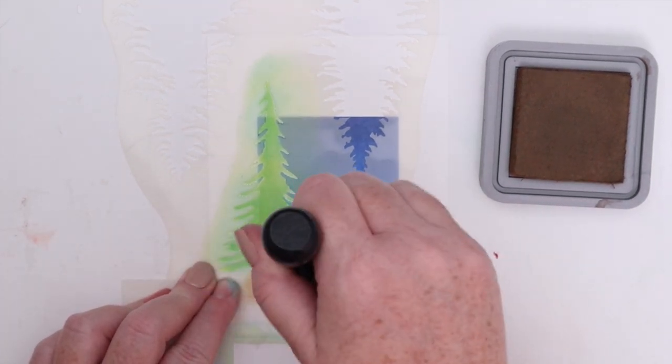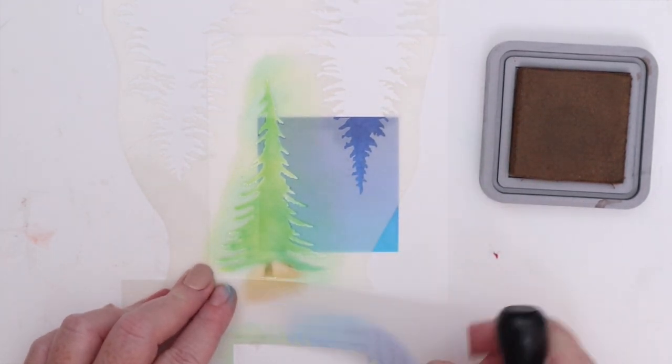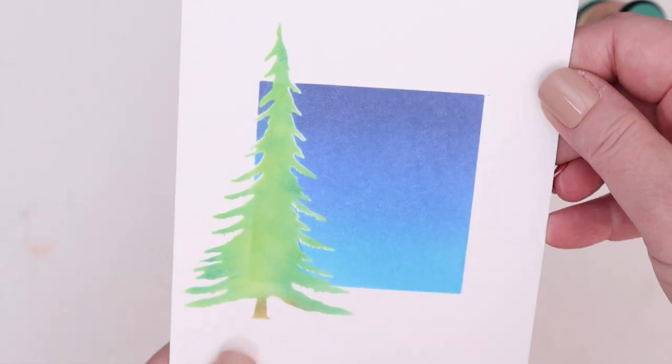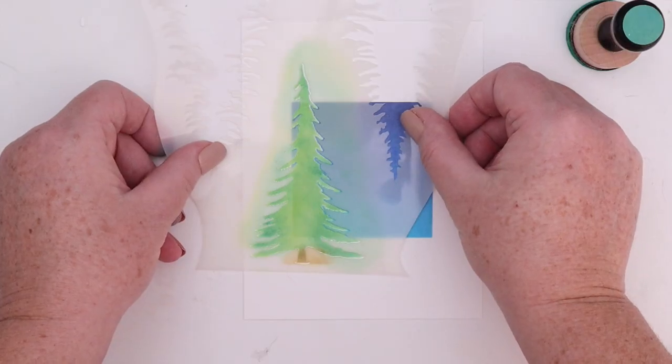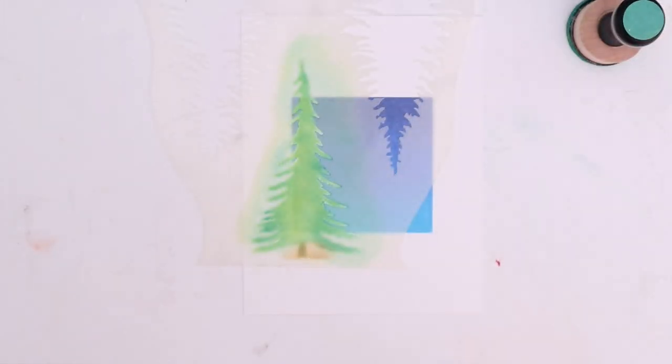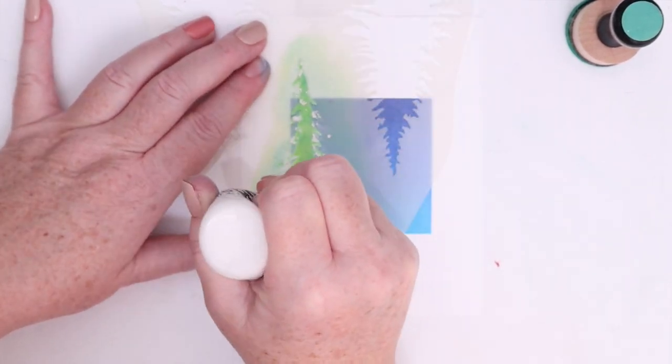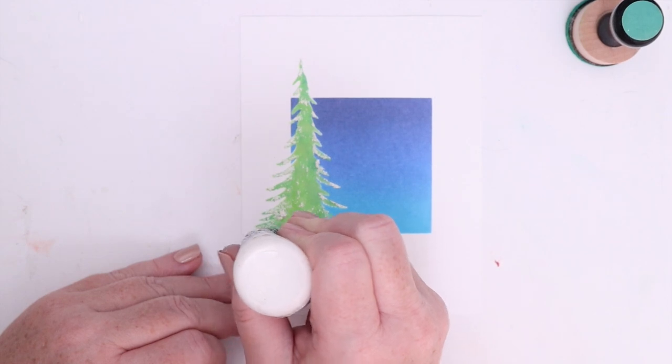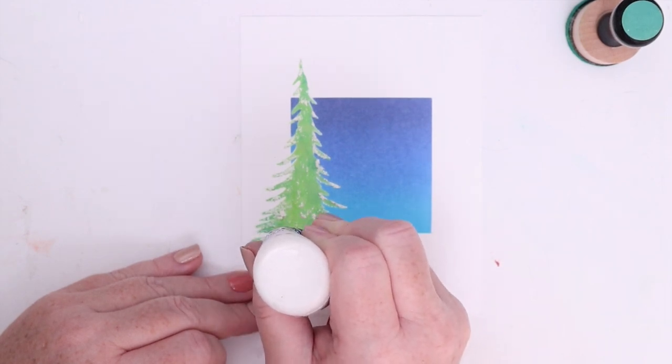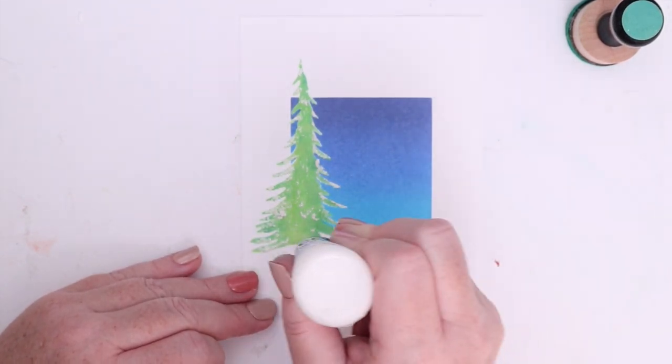I want to add snow to the tree boughs, so I replaced the stencil once again and this time I add Brutus Monroe Cotton Puff. I peel off the stencil for the last time and add Cotton Puff to the base of the tree to create a pile of snow underneath. If you've seen my favorite white gel pen video, you know I love adding white gel pen dots to create snow and stars, so I'll do that here on the blue square.